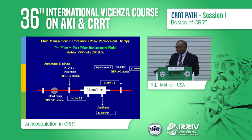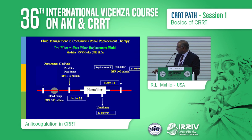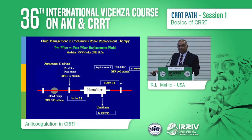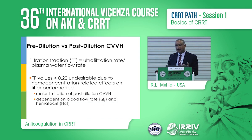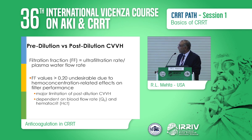If you dilute the blood going in, you reduce the filtration fraction, because the more viscous the blood is as it emerges from the filter, the more likely it is to clot. A filtration fraction of more than 20 to 25% is correlated with frequent clotting. Your attempt should be to keep it below that overall.